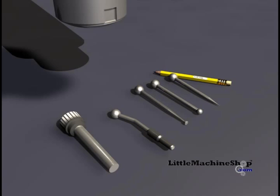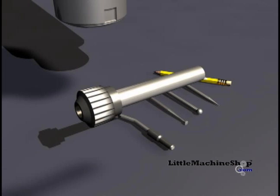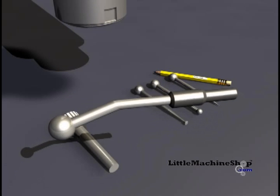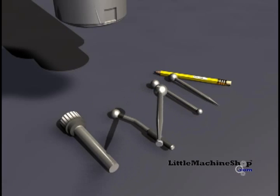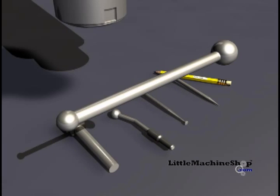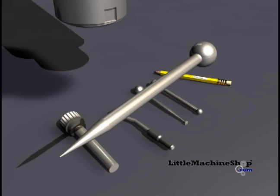The wiggler usually comes in a set of five pieces: a collet, a gauge holder, a disc probe, a ball probe, as well as a pointer probe.